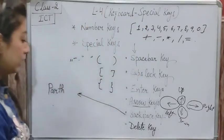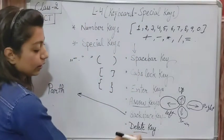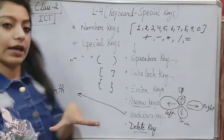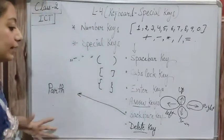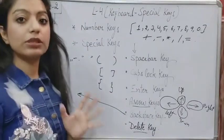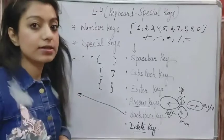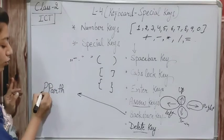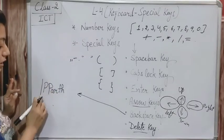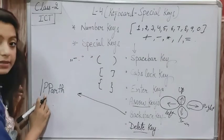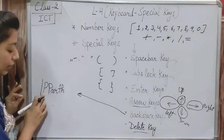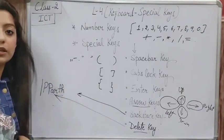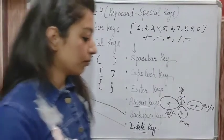Now if I want to use the Delete key — the Delete key is also used to delete, but it deletes characters on the right-hand side of the cursor. For example, if I have typed a double letter by mistake, I position the cursor before it and press Delete to remove the character to the right of the cursor.